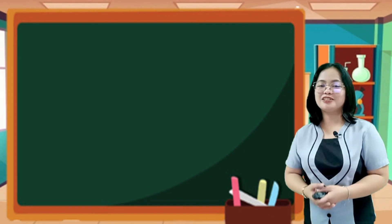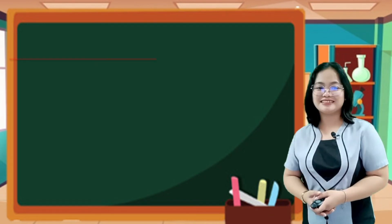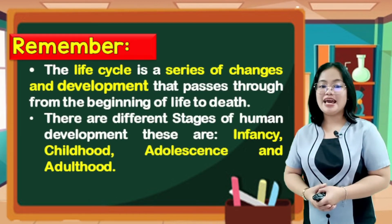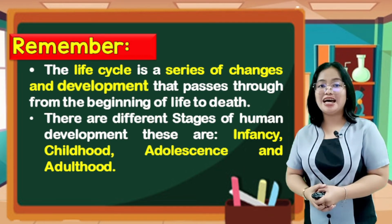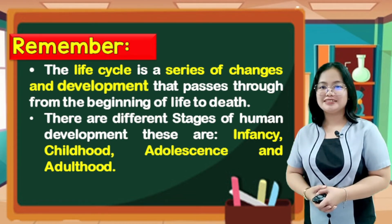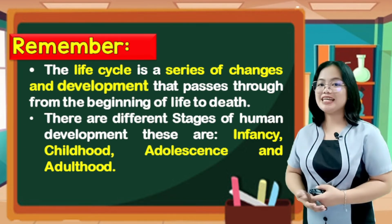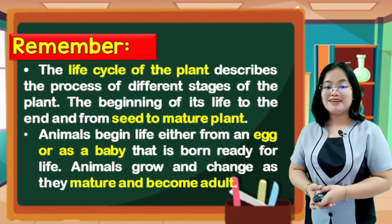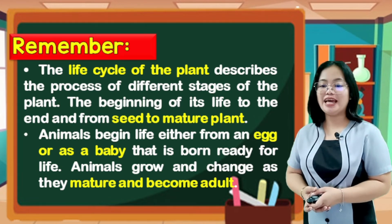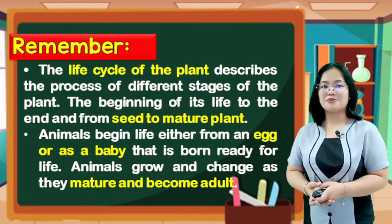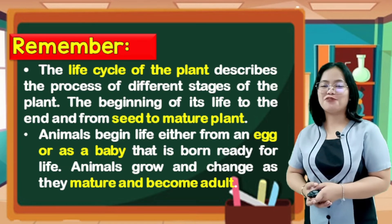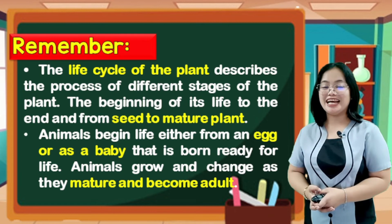Always remember all the learnings we acquired for today's discussion. The life cycle is a series of changes and development that passes through from the beginning of life to death. There are different stages of human development: infancy, childhood, adolescence, and adulthood. The life cycle of the plant describes the process from seed to mature plant. Animals begin life either from an egg or as a baby born ready for life, and grow and change as they mature.